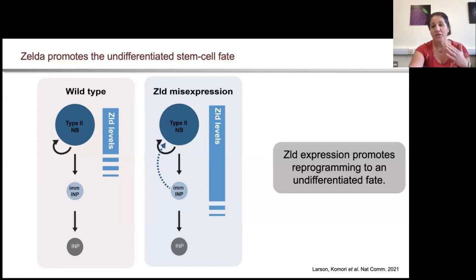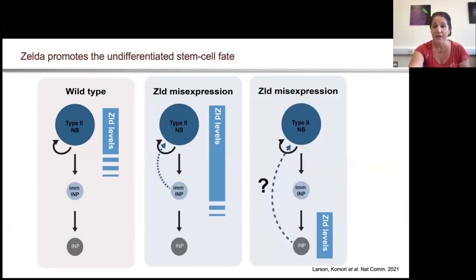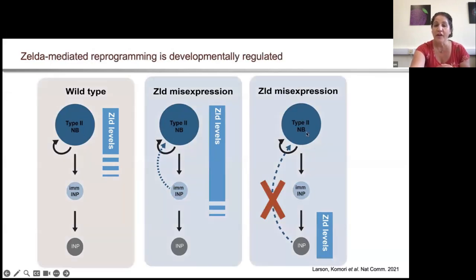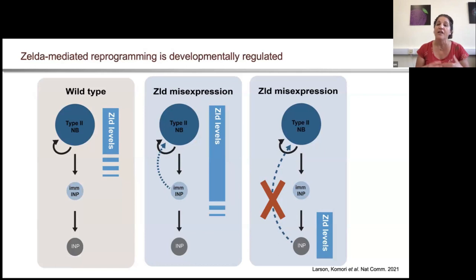We then asked what happens if we go further down this differentiation lineage and express Zelda in the INPs. We asked whether we could again get extra neural stem cells, and what we found was that that was not the case — there was some barrier being developed as these cells differentiated that now kept Zelda from reprogramming these cells.